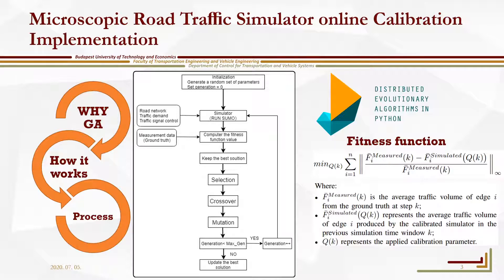After the problem to be solved is transformed into the fitness function, the genetic algorithm will find the individual with the smallest value of the fitness function. By means of genetic rules, individuals are combined through crossover and mutation to produce new populations in each generation, and then decoded to get the solution of the original problem.